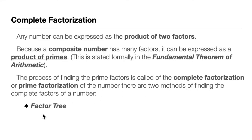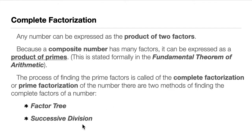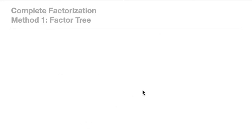The process of finding prime factors is called complete factorization, or prime factorization. There are two methods of finding the complete factors of a number: one is using a factor tree, which will be illustrated in a moment, and the other is successive division.